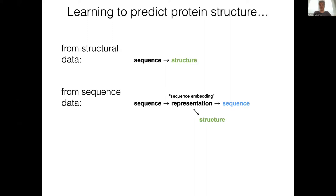Another very powerful technique, also used to a large extent by AlphaFold and RosettaFold, is learning from sequence data alone. The idea here is that you don't learn directly to predict structure; you learn an intermediate representation, sometimes called sequence embedding, by forcing a model to essentially summarize or represent in a very compact and semantically rich way the sequence data you present to that model. So the model learns how to represent in a very simple way any kind of protein sequence you present to it.